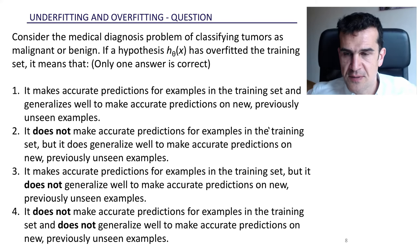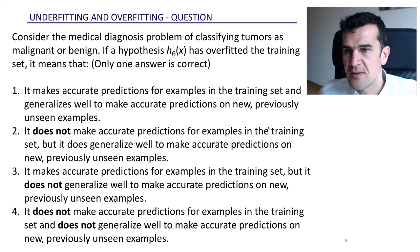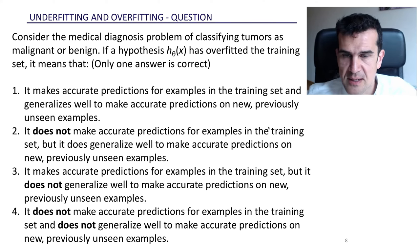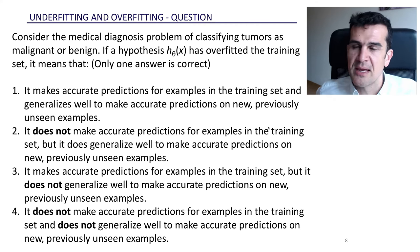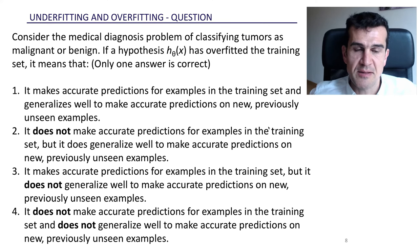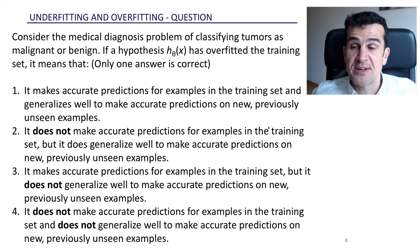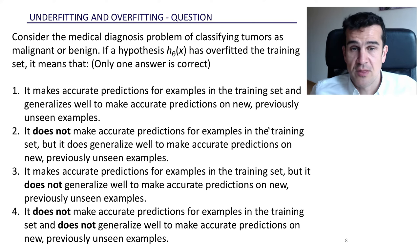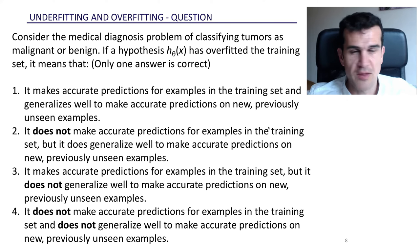Let's look at each of these answers one by one and comment on them. It makes accurate predictions for examples in the training set and generalizes well. That means that it makes accurate predictions on new, previously unseen examples. Well, this is perfect. This is what we want. So this is not overfitting. This is our target. This is what we aim for.